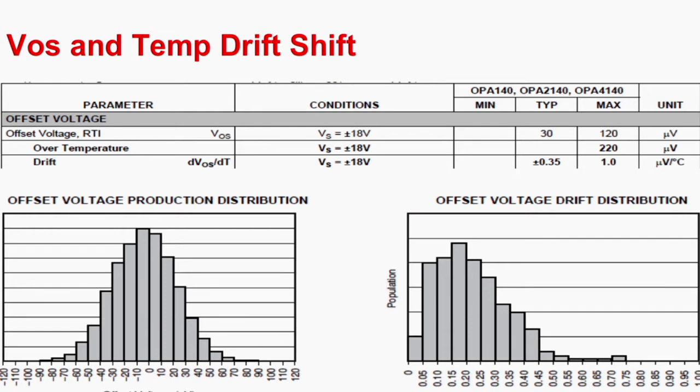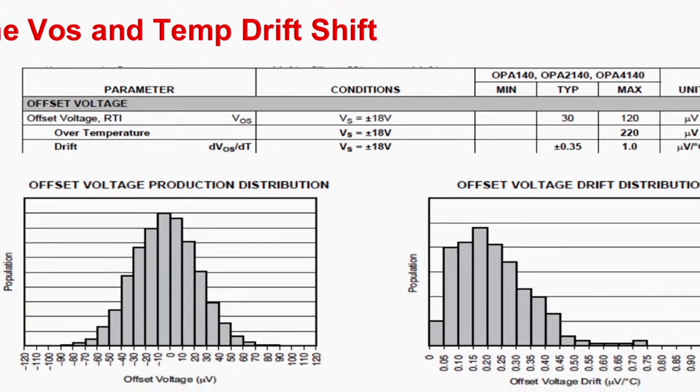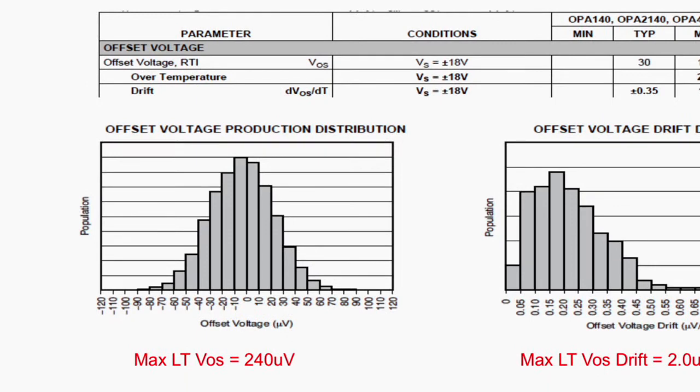Similarly, when it comes to the drift, the standard deviation is 0.35 microvolts per degree C, with the maximum value of 1 microvolts per degree C. The distribution of the voltage offset one may see on the left side. Over the life of a product, the maximum value of 120 microvolts can double and can become 240 microvolts.